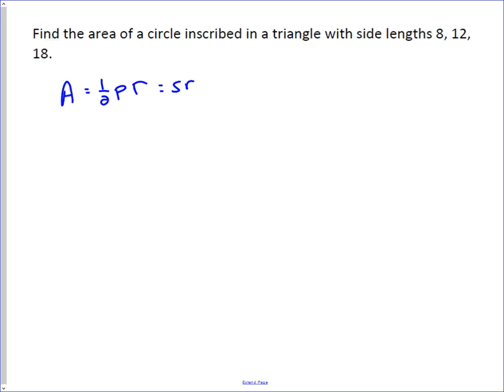And so in this case, we can find the semi-perimeter very easily. It's just going to be one-half times eight plus twelve plus eighteen, which is the perimeter. We don't know r, and so what's left is trying to find out what the area of the triangle is.